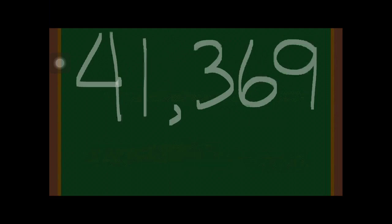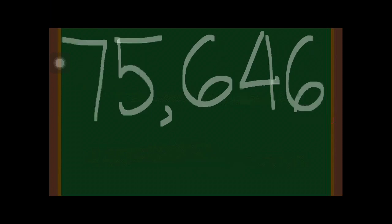Next, we have 41,369. The underlined digit is the first digit from the right, which is digit 9. So the place value of digit 9 is the ones place. How about 75,649, where the underlined digit is digit 7?